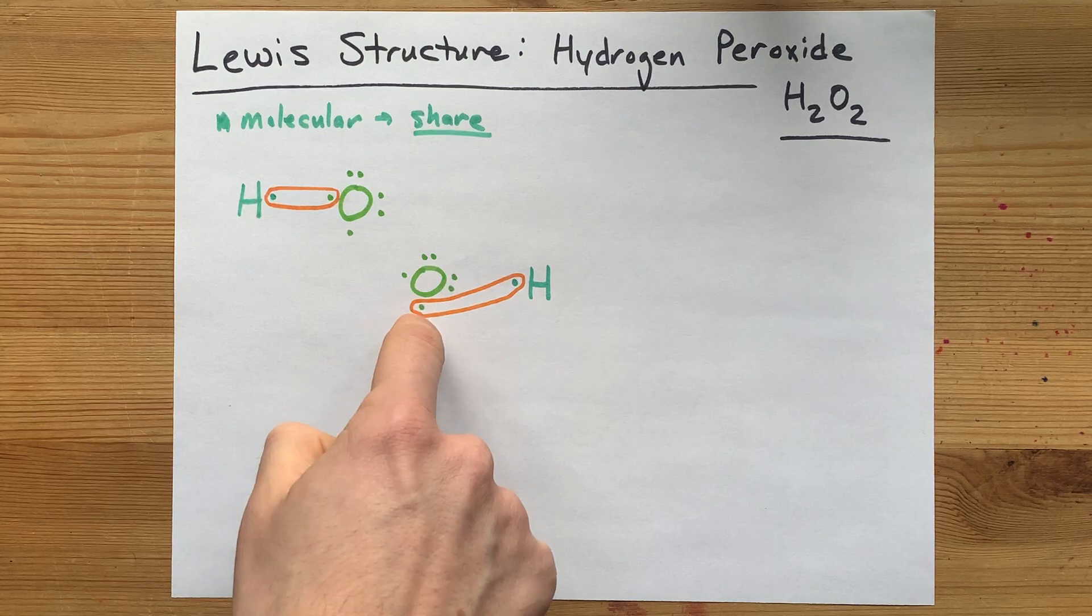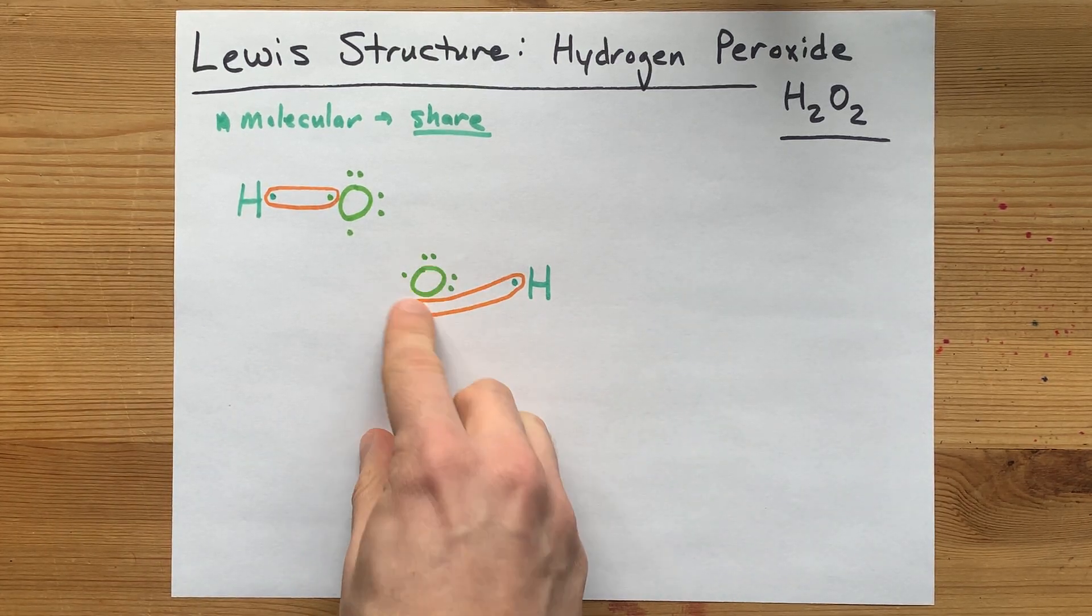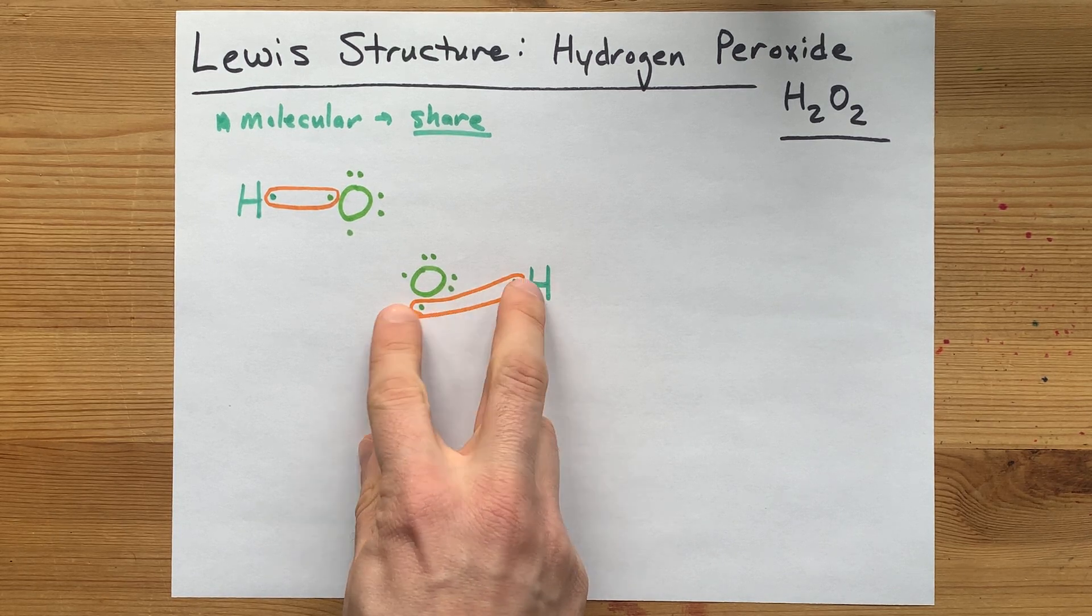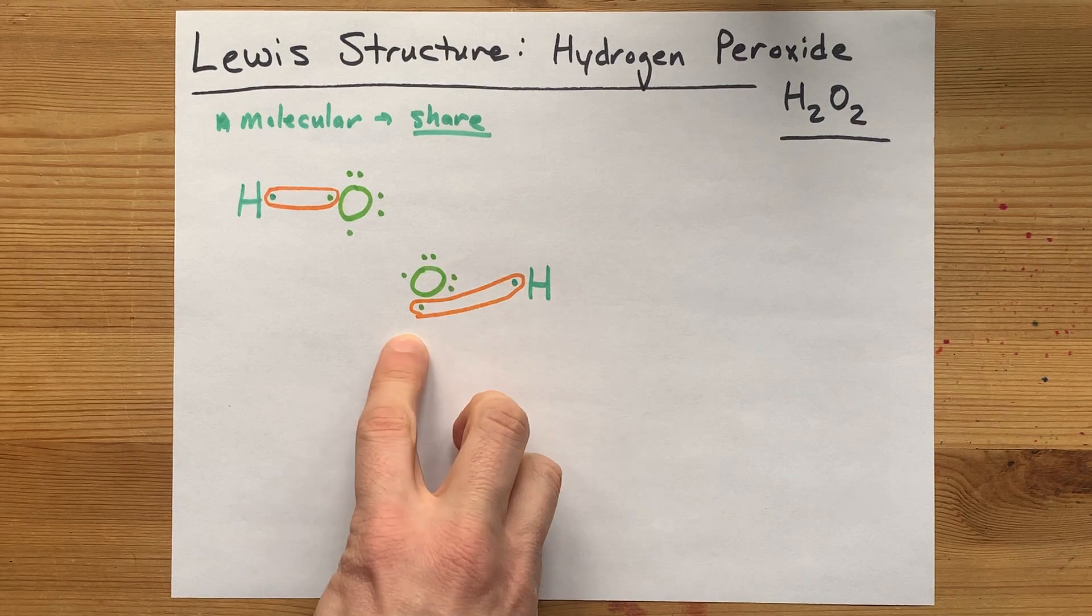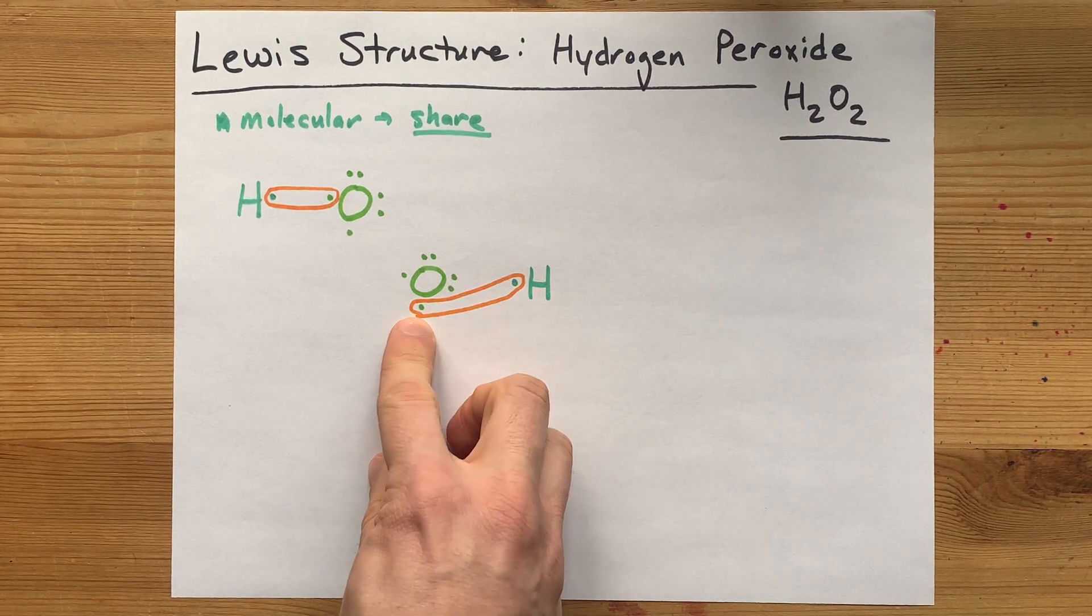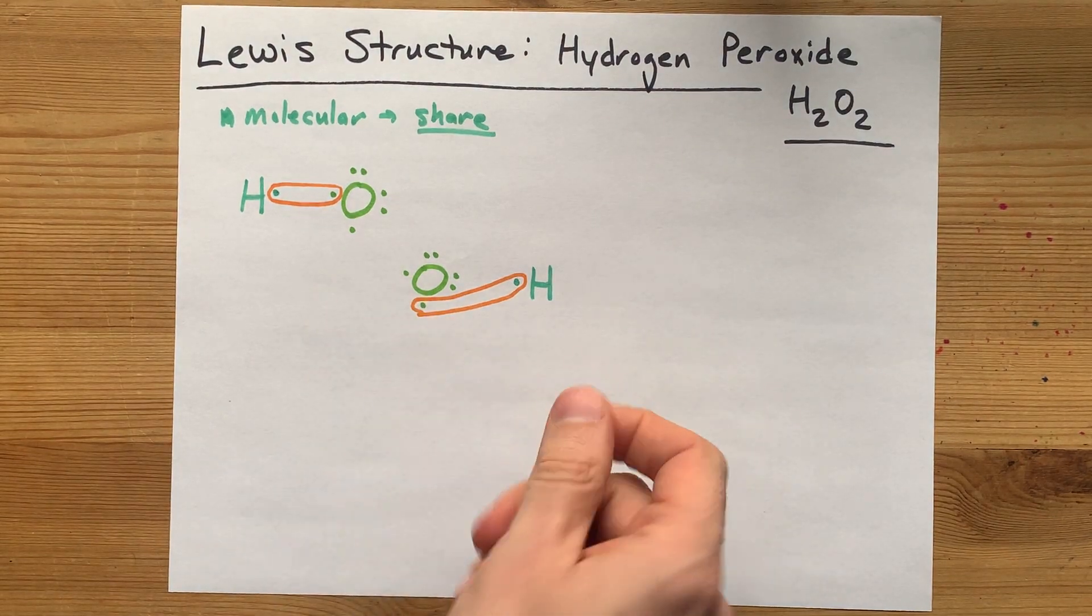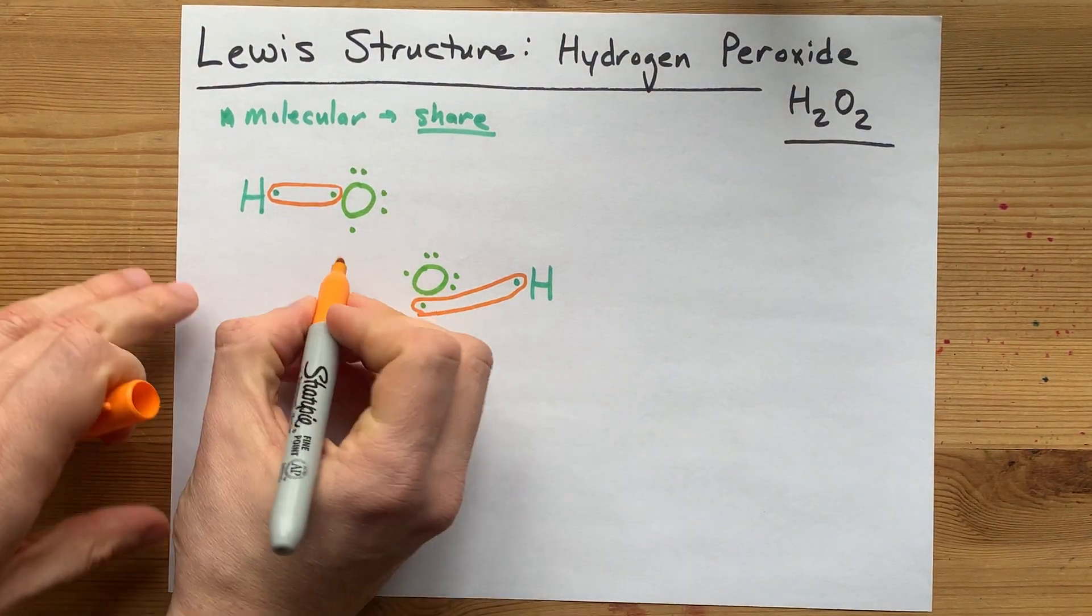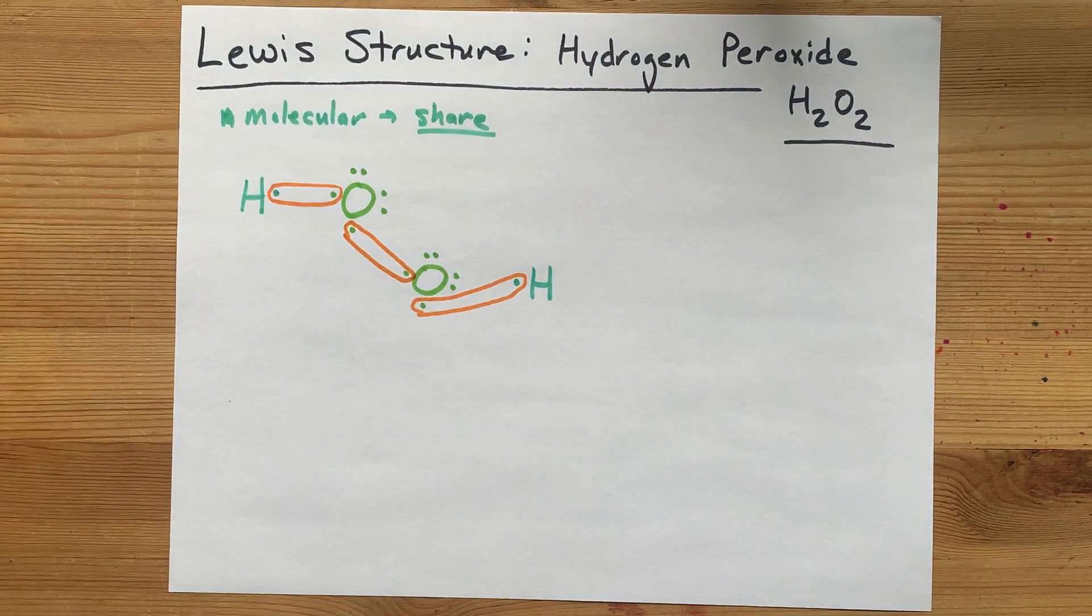Now, each of these oxygens has seven electrons. I know, it brought six, but now these two count as shared. So this is now oxygen's seventh, and this is also hydrogen's second. So both of these oxygens have seven valence electrons. And if I pair up these two unpaired electrons, now each of these oxygens has eight.